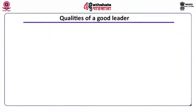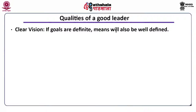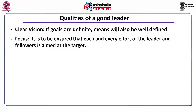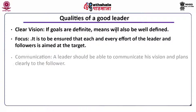Now we will discuss qualities of a leader. First is clear vision — clarity of objective is most important. If goals are definite, means will also be well defined. Paths are chosen by keeping in mind the destinations. A leader should be able to see the destination clearly and keep it in front of himself as well as of followers. Next is focus — a leader should be able to focus on the objectives. It is to be ensured that each and every effort of the leader and followers is aimed at the target. Any deviation will question the leadership and may affect acceptance from followers. Next is communication — a leader should be able to communicate his vision and plans clearly to the followers. The mode of communication is to be chosen carefully.